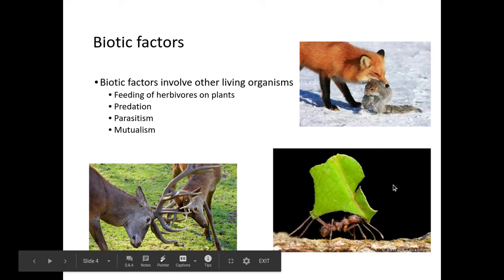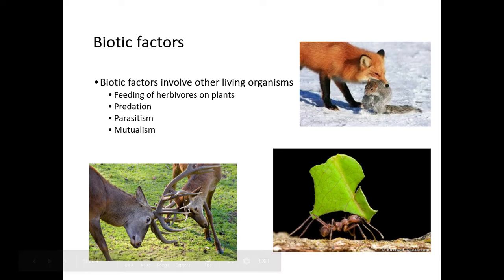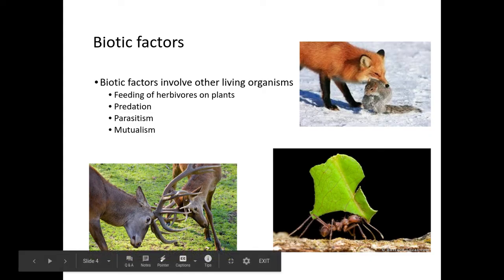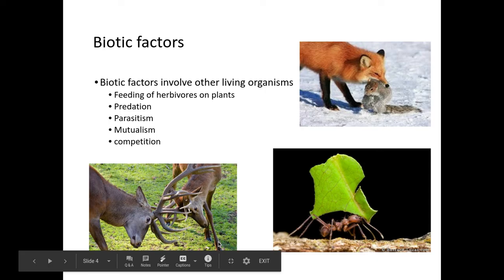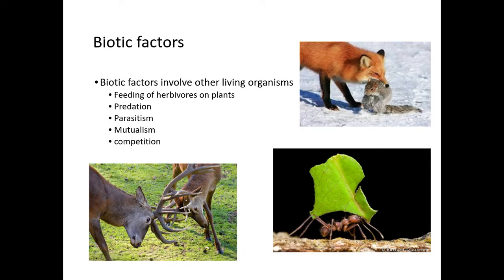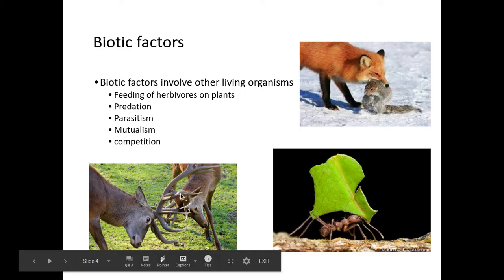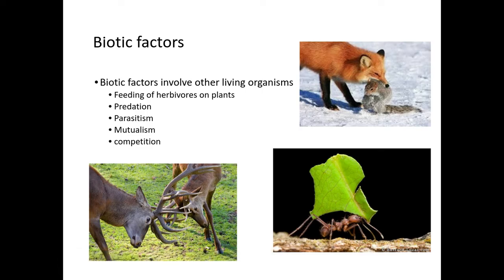Mutualistic relationships — so here we have the leafcutter ants, which have a mutualistic relationship with fungi. They take leaves back to their colony, the fungi is in the nest, the fungi receives the food it needs — the leaves — and the ants also eat the fungus. So they have a mutualistic relationship. We have competition — for example, red deer competing for mates. Competition can be intra-specific, meaning individuals of the same species competing against each other, or inter-specific, which is competition between different species, such as two different seal species competing for space on ice.